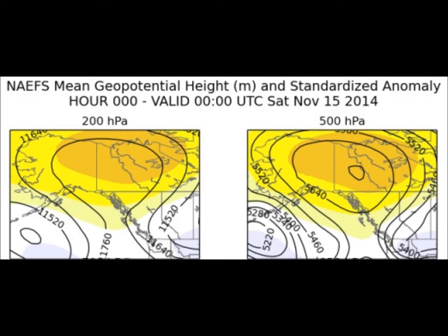Now there are two different types of designations but they're showing the same thing. One is hectopascals and the other is millibars — equivalent units, just labeled as HPA or MB, so when you see those, they are the same thing.